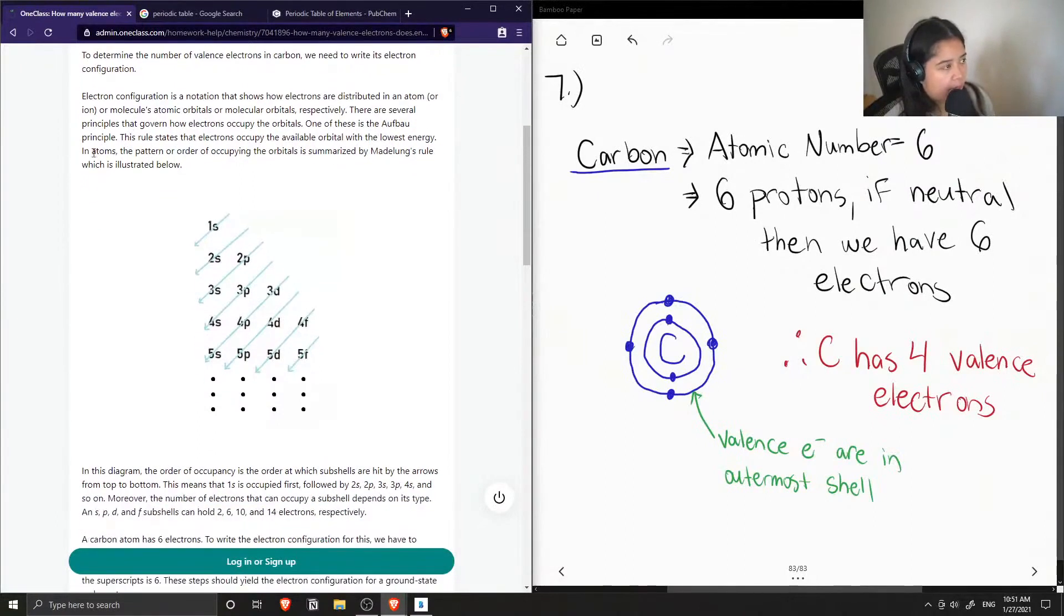One of them is the Aufbau Principle. This rule states that electrons occupy the available orbital with the lowest energy. In atoms, the pattern or order of occupying the orbitals is summarized by Madelung's rule, which is illustrated below.